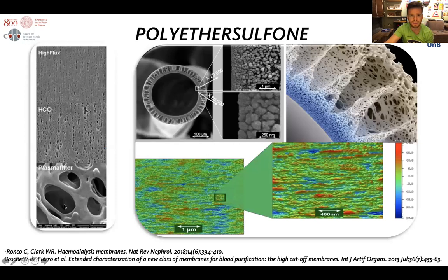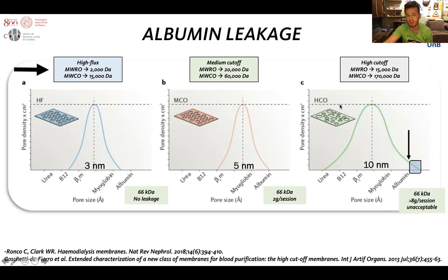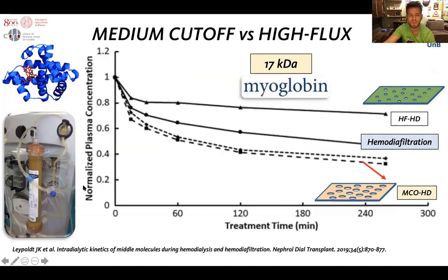We also have new membranes and new filters. On the left we show the scan microscopy of a high-flux filter, a high-cutoff filter, and a plasma filter for example. The newest membranes are the medium-cutoff membranes, which are the most modular membranes so far. They have a pore size larger than the high-flux membrane, albeit smaller than a high-cutoff membrane. This membrane is more uniform in most of its pores — on the y-axis we have pore density, which is more concentrated and more uniform than the high-cutoff membrane. However, due to this uniformity, many pores allow passage of albumin, and albumin leakage is an issue when high-cutoff membranes are applied.